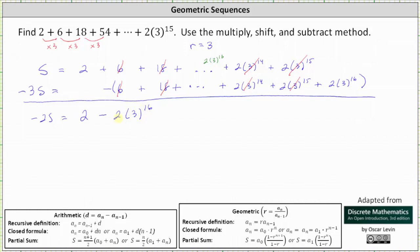And now we solve for s to determine the sum. The next step is to divide both sides by negative 2. And now we simplify. Negative 2 divided by itself simplifies to 1, 1 times s is s.